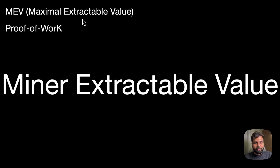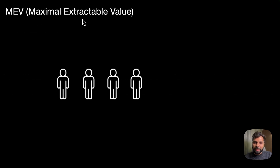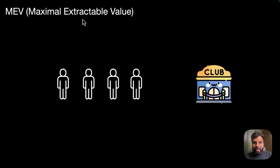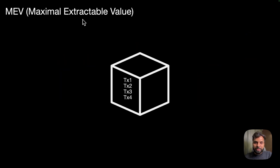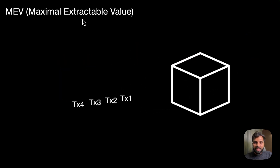Now let's understand MEV with the help of an example. Let's assume that there is an open queue to get into a club. The rule is that each and everyone who wants to get into the club needs to pay the bouncer a fee, and whoever pays the higher fee gets into the club because the bouncer prioritized them. Now relating this to block transactions, let's assume that there are a few transactions all in an open queue waiting to get added into the block. This queue is called the mempool.